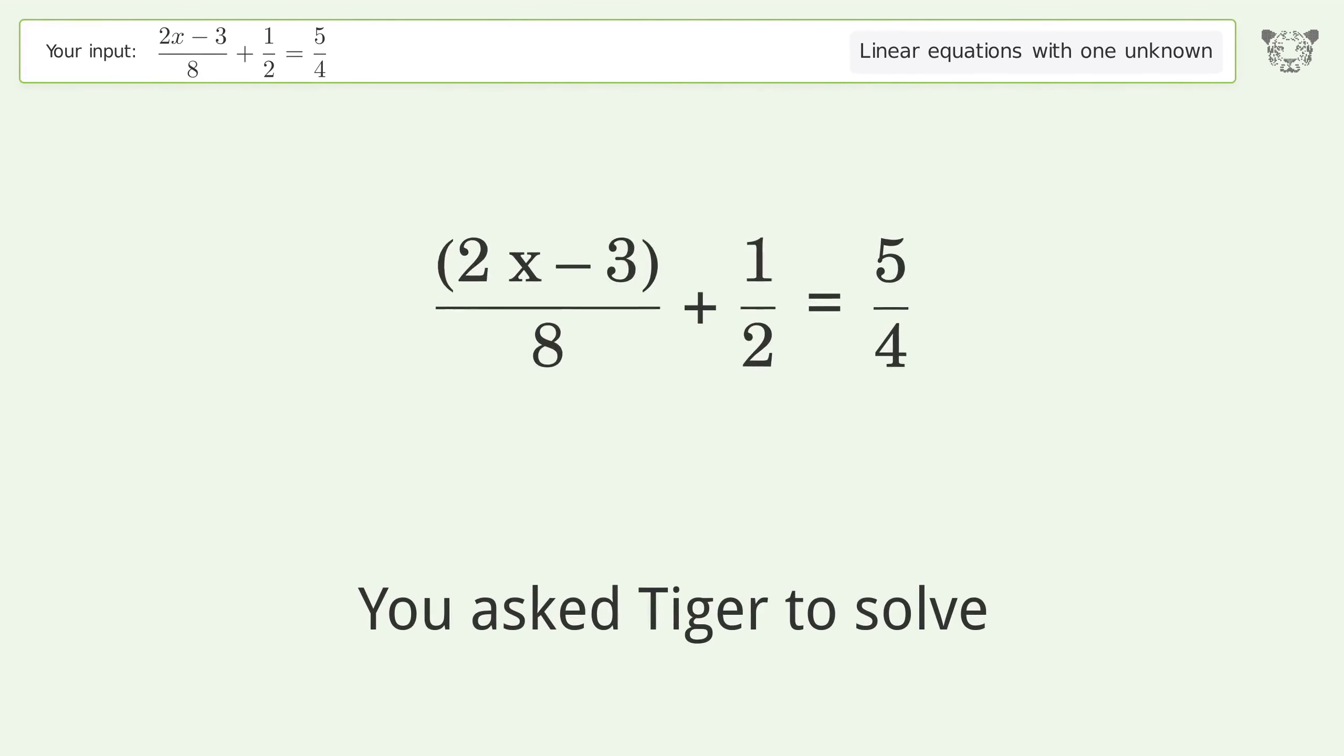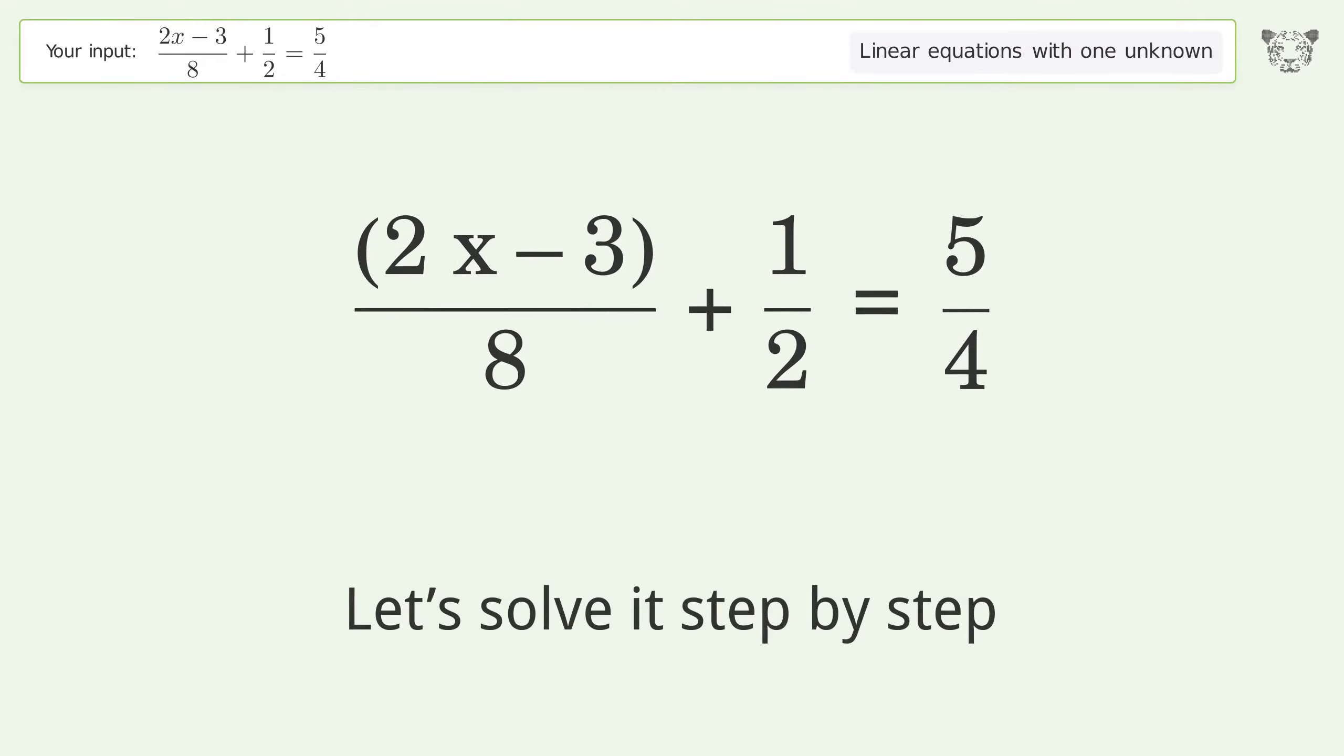You asked Tiger to solve this equation dealing with linear equations with one unknown. The final result is x equals 9 over 2. Let's solve it step by step. Simplify the expression.